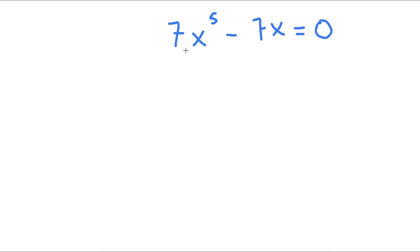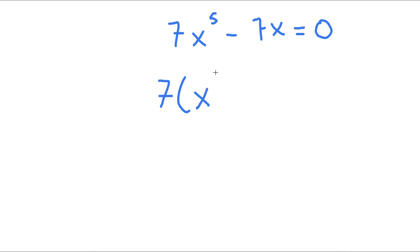In this problem, I have 7x to the power of 5 minus 7x is equal to 0. To solve this, I'm going to first start by factoring out 7. So now I get 7 times x to the power of 5 minus x is equal to 0.